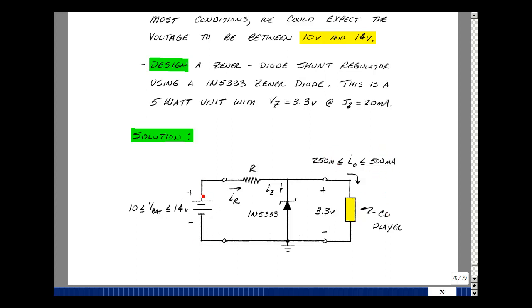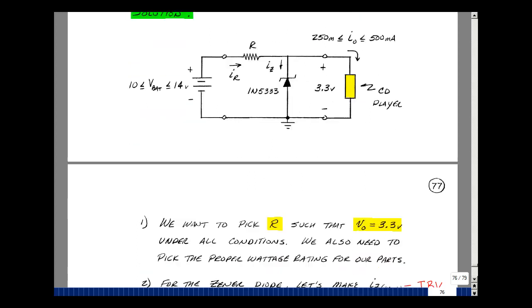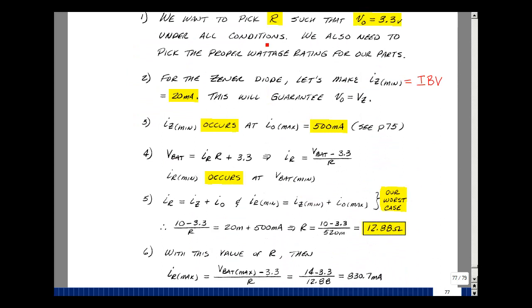My voltage source is somewhere between 10 volts and 14 volts, and I'd like to pick this resistor so that this circuit works under all these conditions. I want to pick the resistor R such that the output's 3.3 volts under all conditions, and I want to specify the power ratings for the parts in my circuit so they don't burn out.